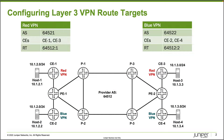Here is our topology. We have the provider's network with two PE devices, PE1 and PE2, and P routers in the middle, P1 through P4. Each PE router is connected to two CE routers. PE1 is connected to CE1 and CE2. CE1 is part of the red VPN, and between CE1 and PE1 it's BGP that is exchanging the customer routes — that's how routes are exchanged across all PE and CE connections.